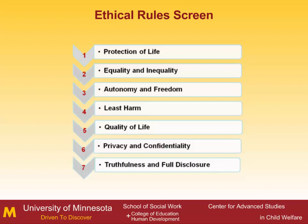The rules in the ethical rules screen are to be applied in descending order: first, protection of life; next, equality and inequality; then autonomy and freedom; then least harm; then quality of life; then privacy and confidentiality; then truthfulness and full disclosure. In situations in which ethical values may conflict, social workers also need to identify their own values and assess the importance of these values relative to others. In addition, social workers must also take into account the client's values, the agency's values, and the laws of the federal, state, and local government that apply.